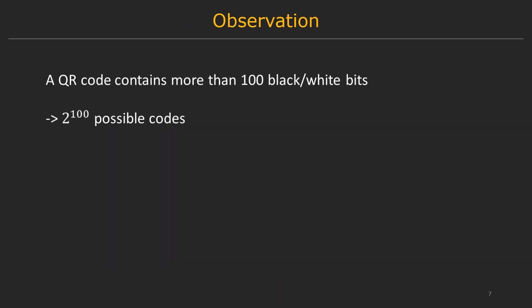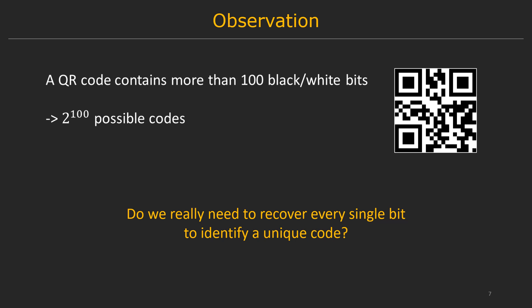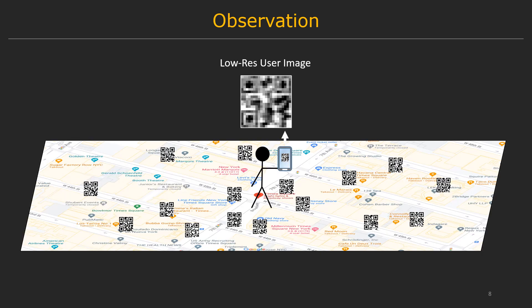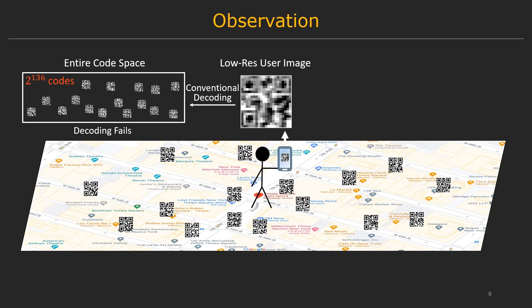Our main observation is that a QR code is a binary code containing more than 100 black or white bits, so there are 2^100 possible codes in total. But do we really need to recover every single bit if our goal is to just identify a unique code? Let's assume you're at Times Square, you scan a code at a distance and get a low-resolution image. Conventional decoding tries to find the correct code in the entire code space, which fails because there are just too many possibilities.